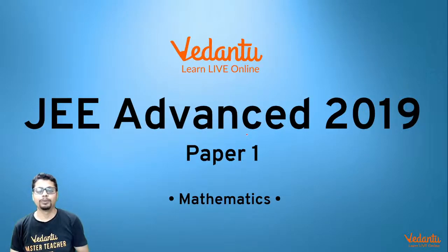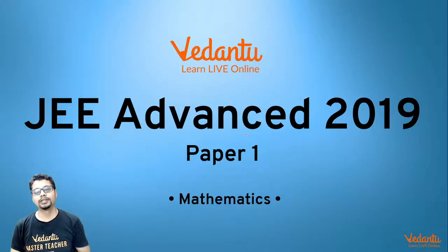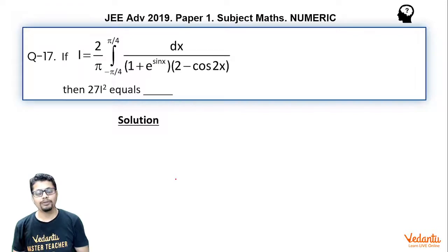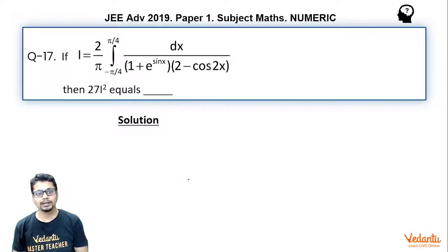Hi everyone, I am Shubham Jhabar, a master teacher at Vidantu. We are discussing JEE Advanced 2019 Paper 1 Mathematics. The question for this video is: if I equals 2/π times the integral from −π/4 to π/4 of dx divided by (1 + e^(sin x))(2 − cos 2x), then what does 27I² equal?